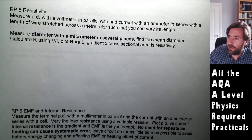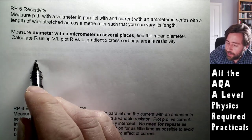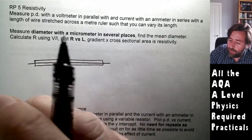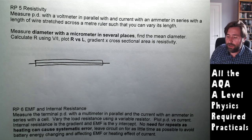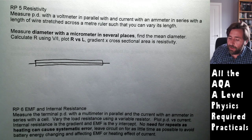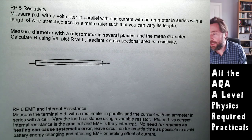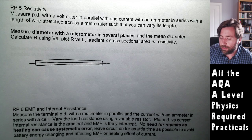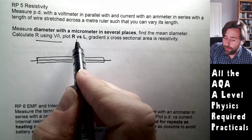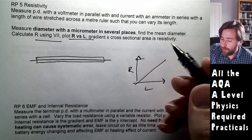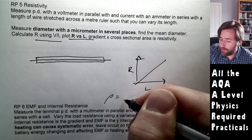For resistivity, you take a length of wire stretched across a metre ruler and vary the length in the circuit. Using a voltmeter and ammeter (as AQA specifies) or a multimeter, you measure the pd and current, calculate resistance R = V/I, and plot resistance against length. The gradient multiplied by the cross-sectional area gives the resistivity.